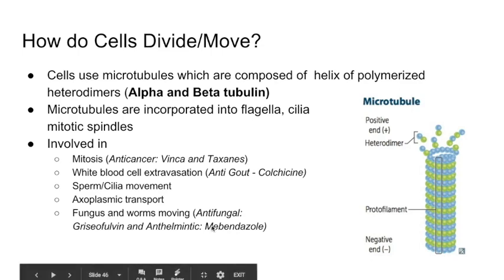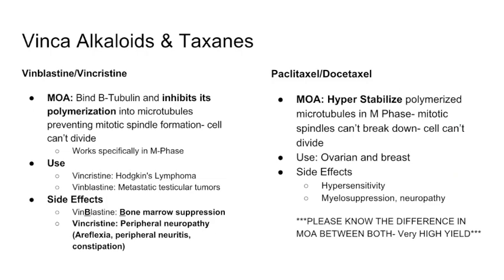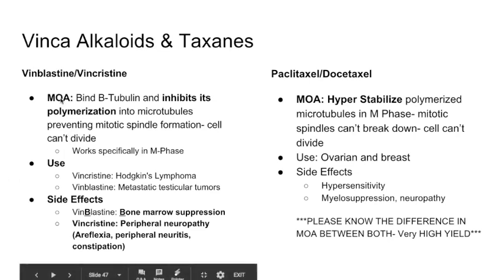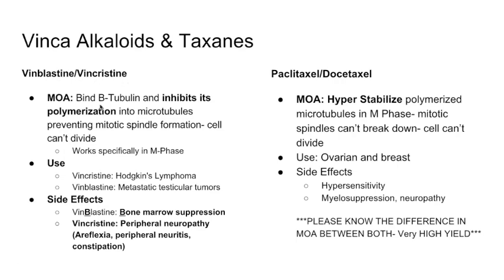There are two classes of medications that block microtubules: the vinca alkaloids and the taxanes. The vinca alkaloids — vinblastine and vincristine — bind beta tubulin and inhibit its polymerization, so beta tubulin cannot polymerize with alpha tubulin. Without mitotic spindle formation, cells cannot divide.